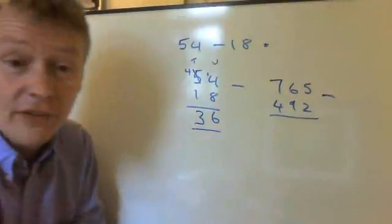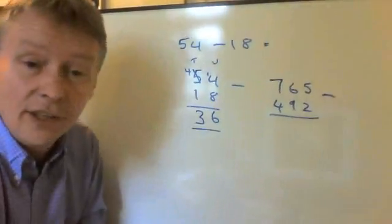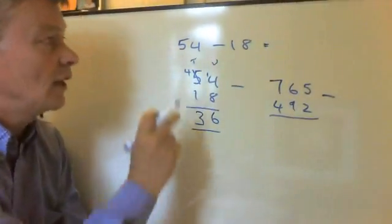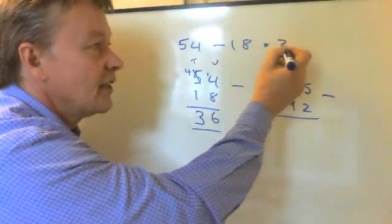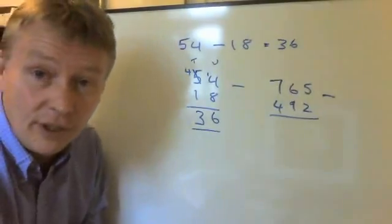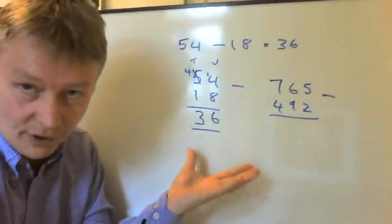And this is a way that I see a lot of students doing. It's perfectly acceptable. It works perfectly well. It means 54 take away 18 is 36 and the method can be used for quite large numbers as well.